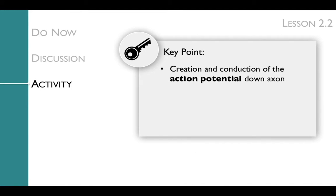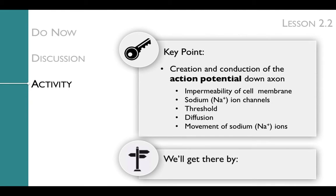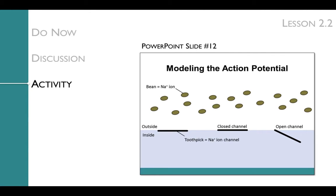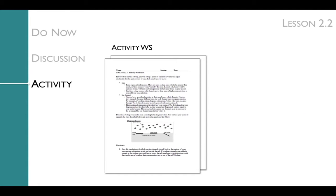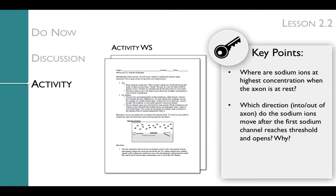The key point of the activity is to demonstrate the creation and conduction of the action potential down the axon, and review the forces that govern that process — including the impermeability of the cell membrane, sodium ion channels, threshold, diffusion, and the movement of sodium ions. Students work in small groups using dried beans to represent sodium ions and toothpicks or pipe cleaners to represent sodium channels. The activity worksheet guides students through key questions: Where are sodium ions at highest concentration when the axon is at rest? Which direction do sodium ions move after the first sodium channel opens and why? And how does the movement of sodium ions change the charge inside the axon?